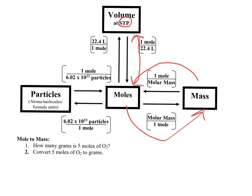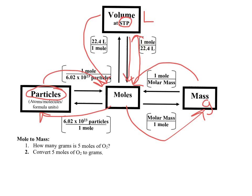Standard temperature and pressure means zero degrees Celsius and a pressure of one atmosphere. Remember, volume is in liters, mass is in grams. If you want to go from moles to particles or particles to moles, you can use your map as well. Particles means anything that is individual — individual atoms like an iron atom, individual molecules like carbon dioxide, or formula units like sodium chloride.